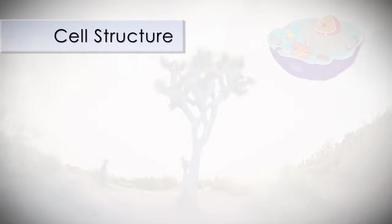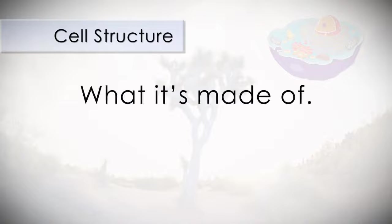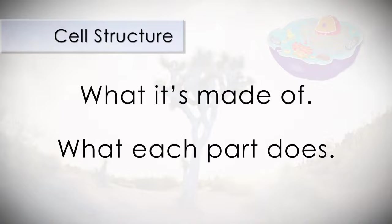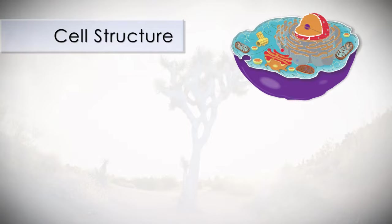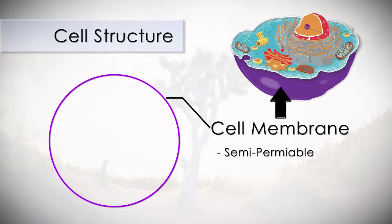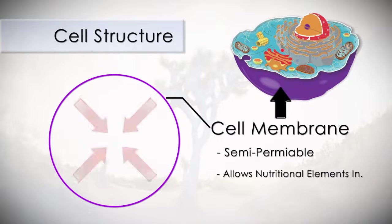Here's a quick look at the basic structures of the cell - in other words, what it's made of and what each part does. The cell membrane is a semi-permeable structure that allows nutritional elements to enter the cell.